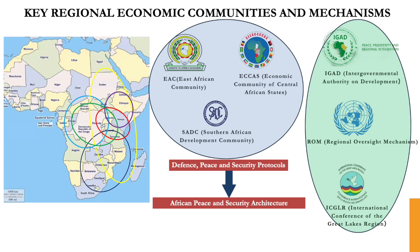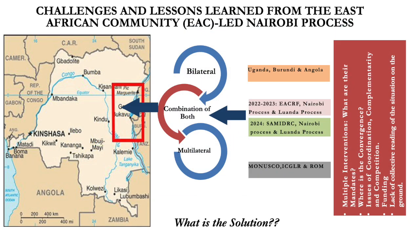We are also looking at other regional mechanisms like the Regional Oversight Mechanism — ROM — which is co-chaired by the African Union and the United Nations. This mechanism was put in place under the framework for peace and security to look at security in the Democratic Republic of Congo. When the East African Community-led peace process was given the mandate in April 2022, we embarked on that task and have held a number of meetings since.